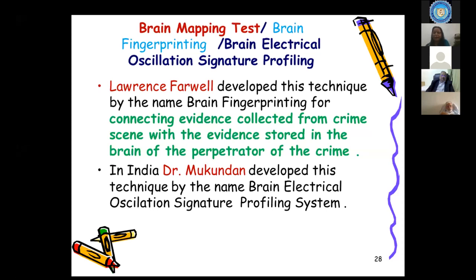Brain fingerprinting — Brain Electrical Oscillation Signature (BEOS) profiling. Farwell originally developed this technique, and then Dr. Mukandhan developed it further under the name Brain Electrical Oscillation Signature Profiling System. This technique doesn't detect lies as such; it only tells you whether this knowledge is present or not present in the subject's brain.